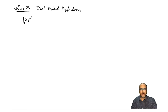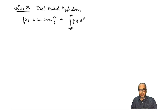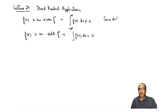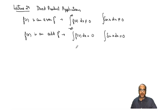We know what an even function and an odd function are. If f(x) is an even function, assuming it is continuous over all range, the integration of f(x) will not be equal to zero. Whereas if f(x) is an odd function, the integration of f(x) dx will be equal to zero. For example, the integral of cos(x) over all space is not zero, whereas the integral of sin(x) over all space is zero.